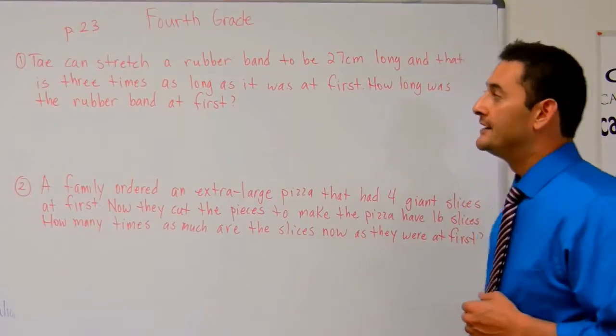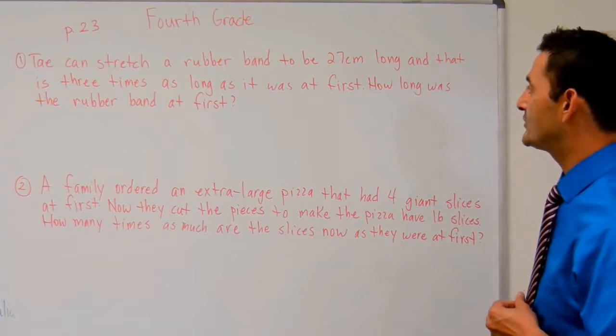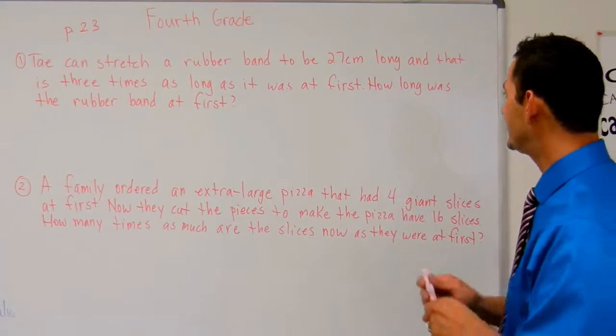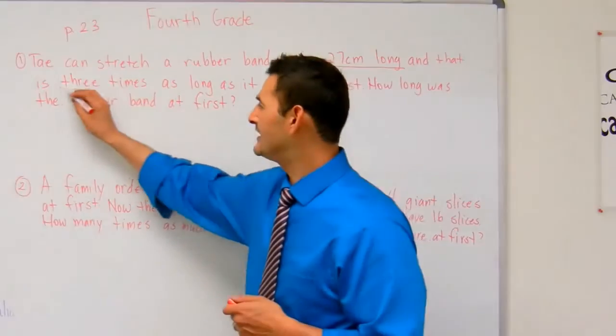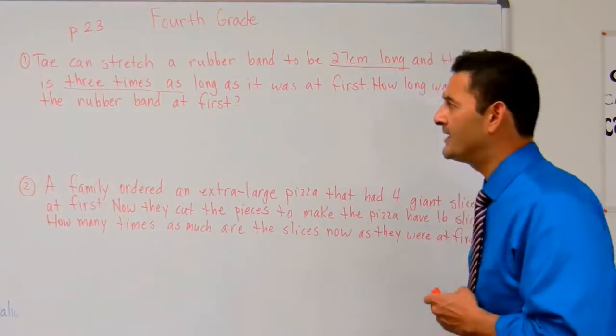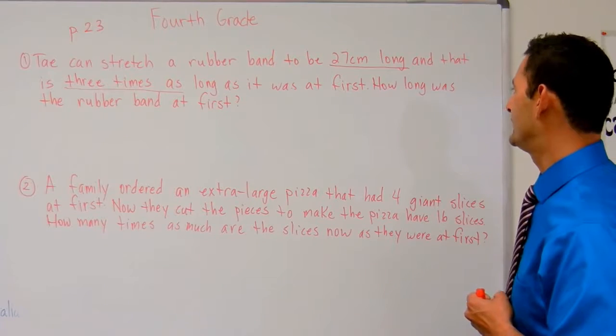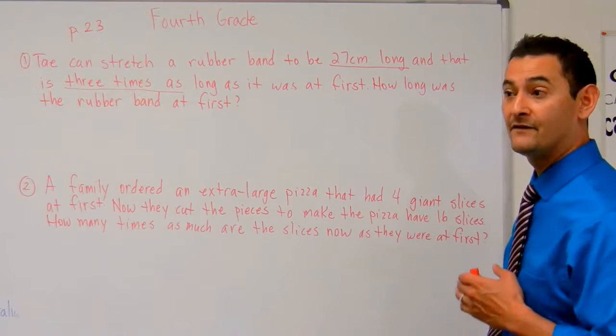Number 1 says: Take and stretch a rubber band to be 27 centimeters long, and that is 3 times as long - 3 times as, that's the key word that we're doing in comparison - as it was at first. How long was the rubber band at first?